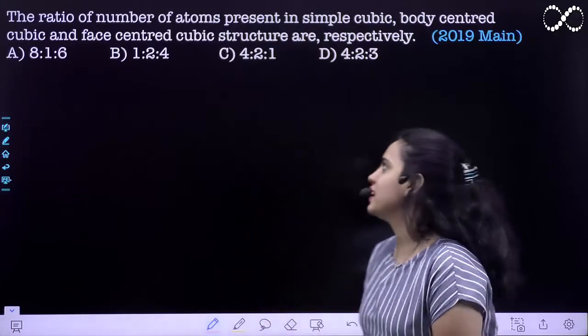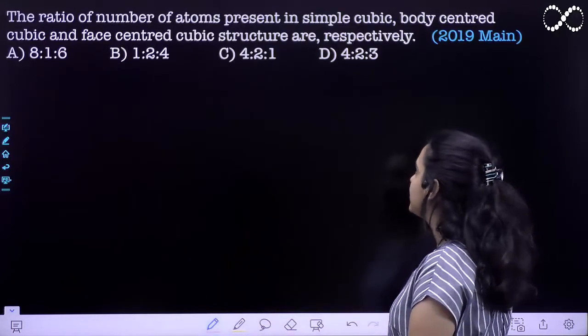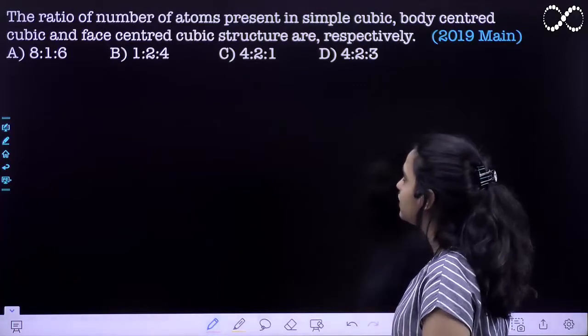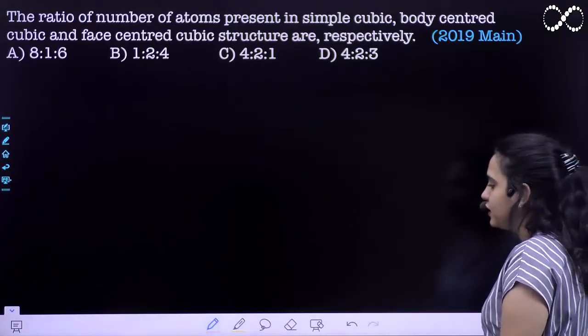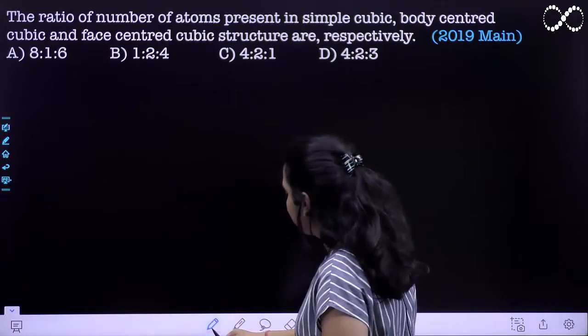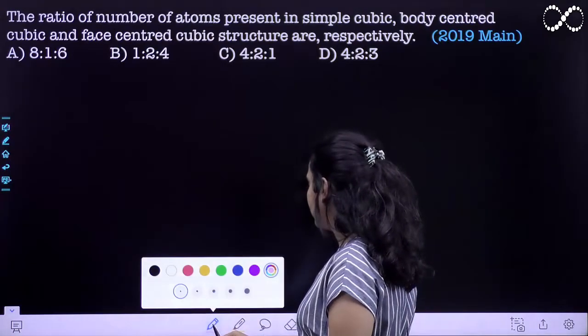Hello students, the question is saying the ratio of number of atoms present in simple cubic, body-centered cubic and face-centered cubic structure are respectively. So basically, you have got number of atoms ratio in the three types of lattices.